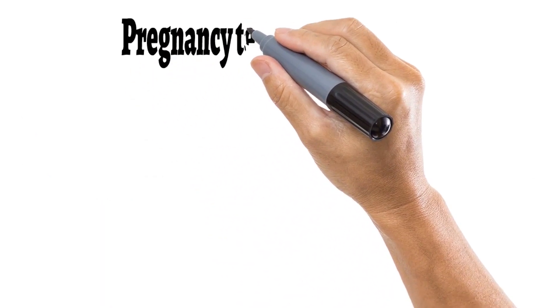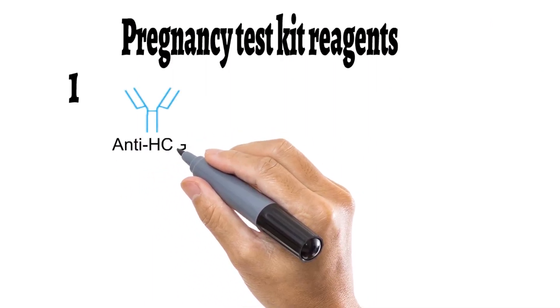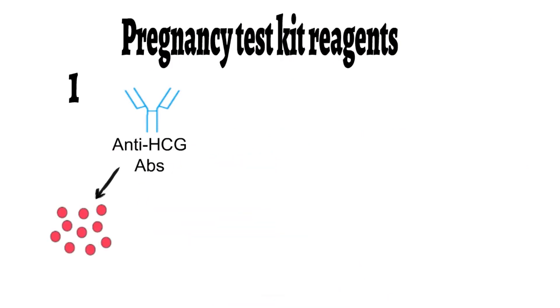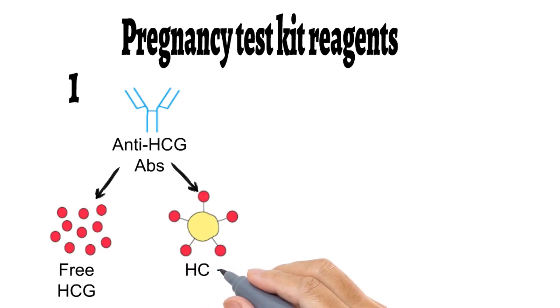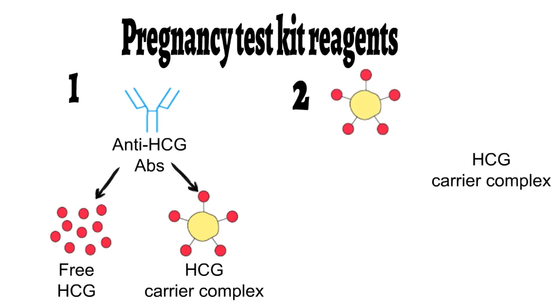The older pregnancy test kit was provided with two reagents. The first is anti-HCG antibodies, which bind to HCG molecules — either free HCG or the HCG of the HCG-carrier complex. The second reagent is the HCG-carrier complex.